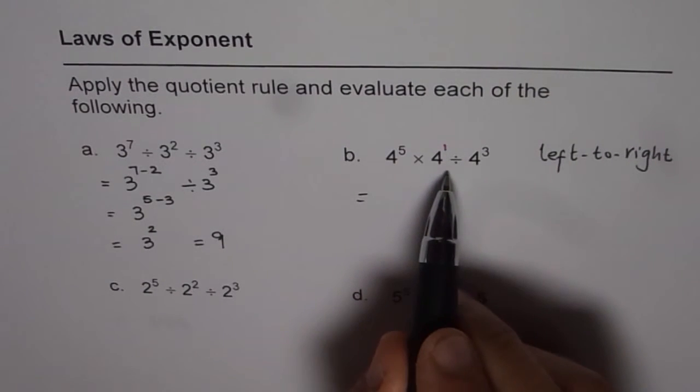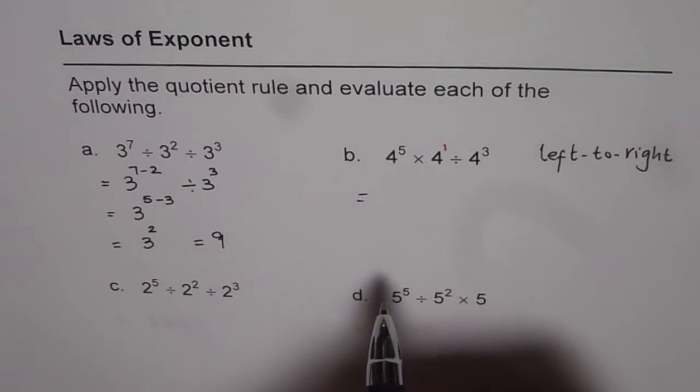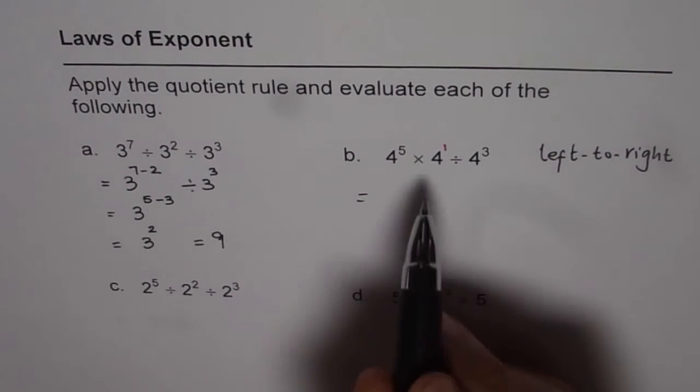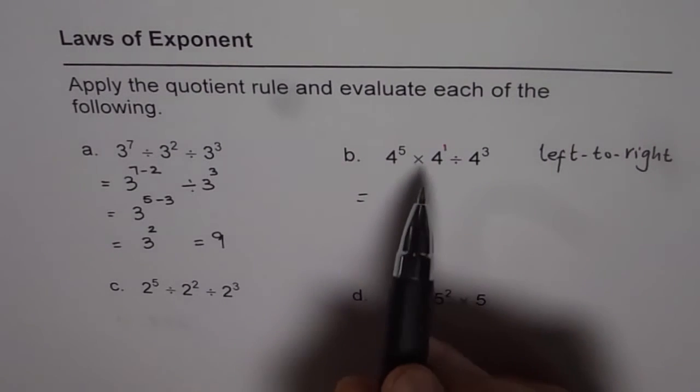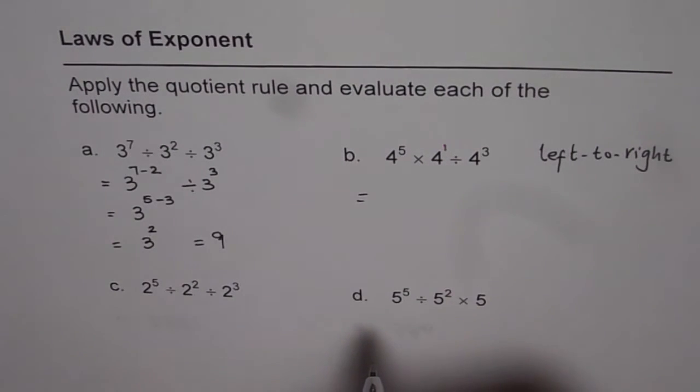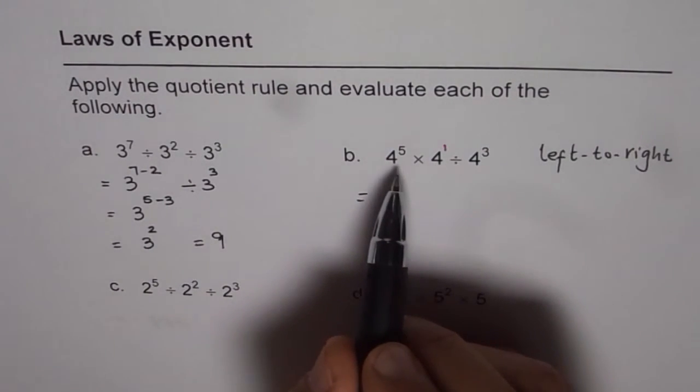If you do division first and then multiplication, then you will get the wrong answer. Multiplication and division, treat them at the same level. And if both the operations are involved, always do from left to right. So we will first do the multiplication, left to right.